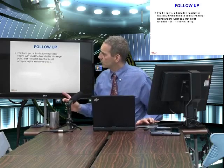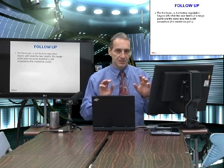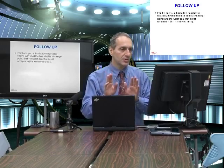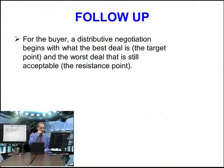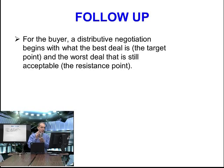For the buyer, the distributive negotiation begins with what the best deal is — the target point. Let's begin looking at this very carefully, step by step, because this is a really key idea. So if you're the buyer, a distributive negotiation begins with the best deal, which means getting the lowest price. I want to buy at the lowest price. So the target point is the best deal, and the worst deal that is still acceptable is called the resistance point.